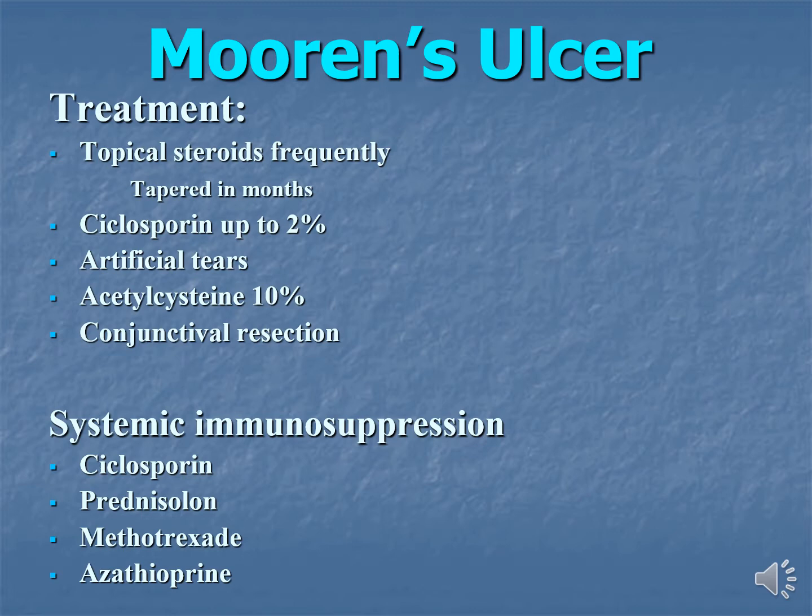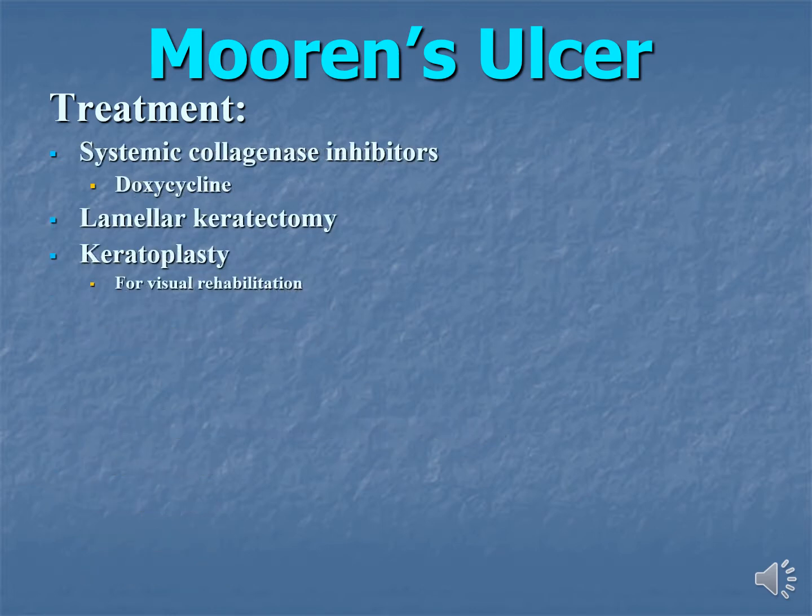In severe manifestation of the disease, we use systemic immunosuppressive agents like cyclosporine, prednisolone, methotrexate, and azathioprine. We can also use systemic collagenase inhibitors like doxycycline. Lamellar keratectomy may be helpful, and for visual rehabilitation, keratoplasty may be needed.